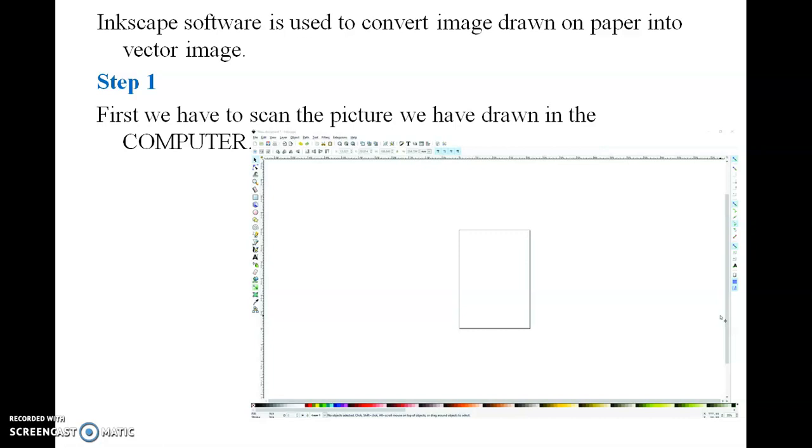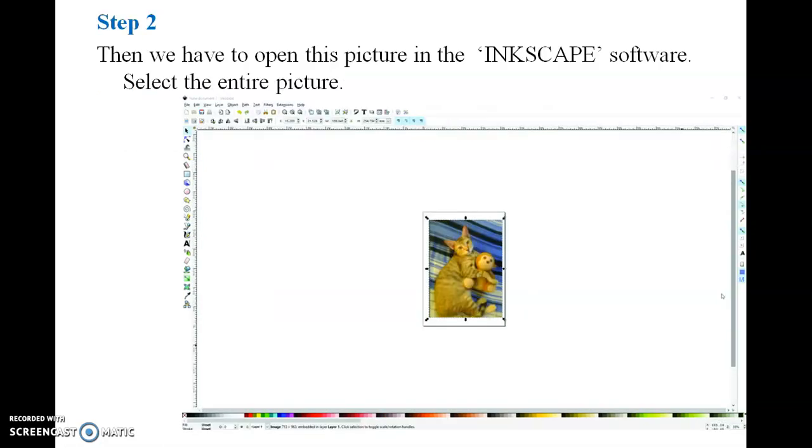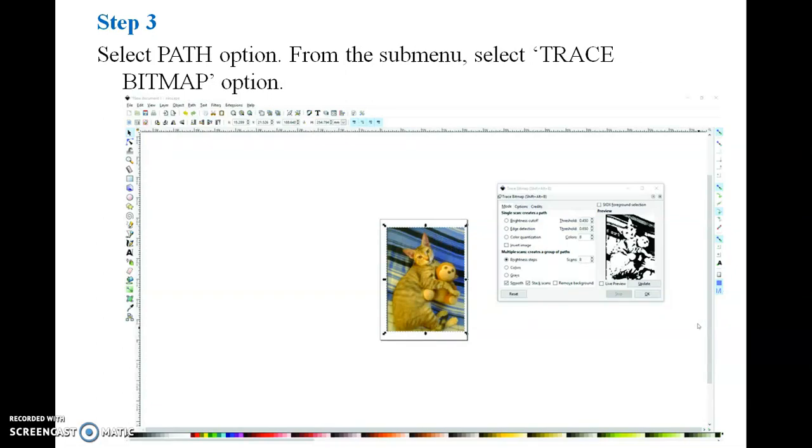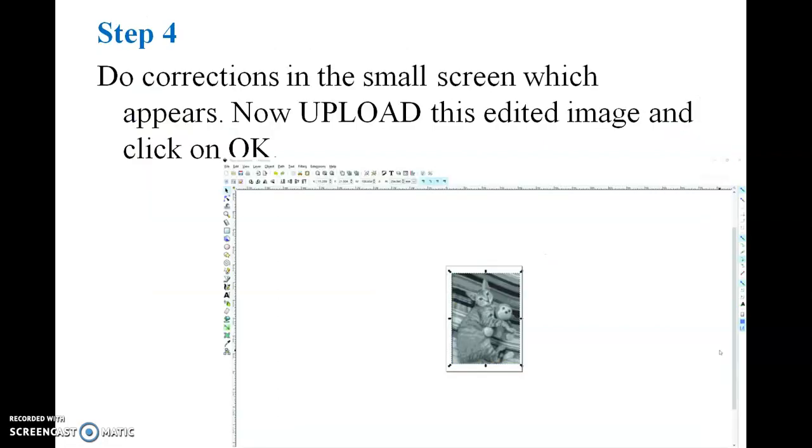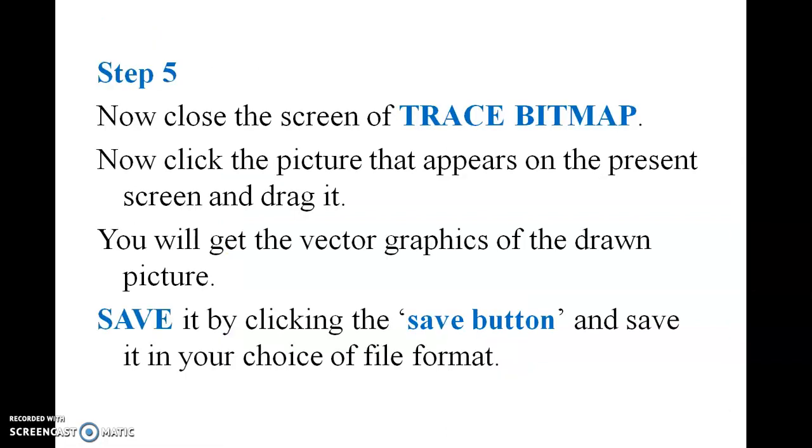This is how Inkscape will act. First we have to scan the picture we have drawn in the computer. Then we have to open this picture in Inkscape software. Select the entire picture and select the path from submenu, that is Trace Bitmap option. It will convert it into that file format - black and white. That is called grayscale. Another thing is grayscale image. The color image will be transferred into a grayscale image. This is the Trace Bitmap. Then you have to save it by clicking the save button.